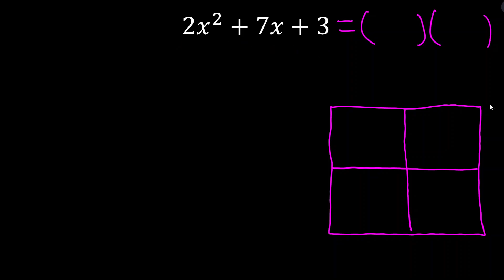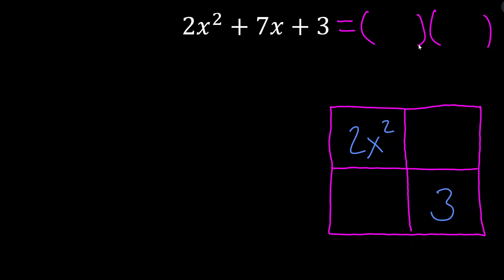We place 2x² in the top left — that's the product of the two x terms. The only way to get x² is to multiply a term with x by another term with x. The constant — we place it in the bottom right — is the product of the two constant terms. That's the only way to get a constant: multiply the two constants from those unknown factors.